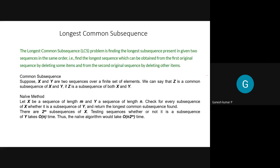The reason we use dynamic programming is to find the optimal solution of the problem. What we have to do is divide the problem into several sub-problems. We find the optimal solution for each sub-problem, combine everything, and the optimal solution of each sub-problem becomes the optimal solution of the main problem.